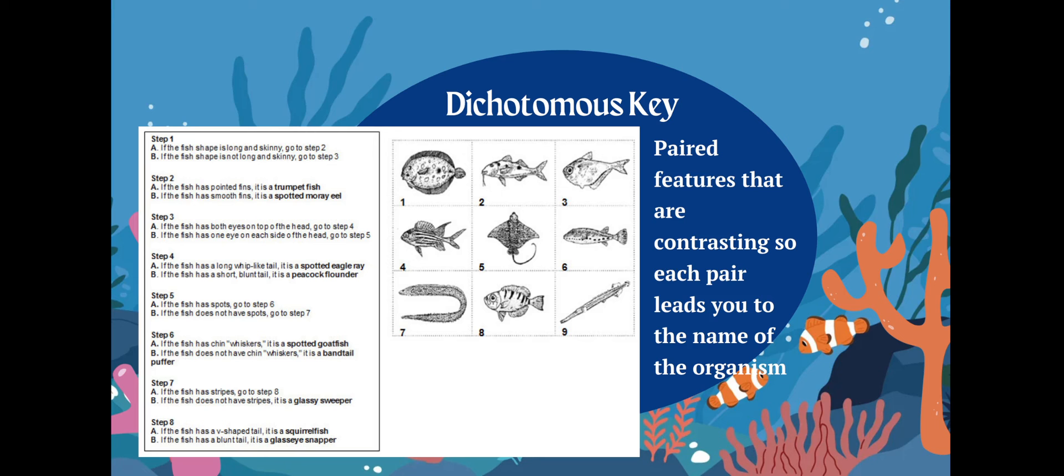So if you look at step one on the left hand side of your screen, if the fish shape is long and skinny, go to step two. If the fish shape is not long and skinny, go to step three. So if you were to look at, let's say, number nine. Number nine is long and skinny. So what are you going to do? You're going to go to step two. That's going to finally lead you to the name of the organism. So you will continue on. If you look at step two, it says if the fish has pointed fins, it's a trumpet fish. If the fish has smooth fins, it's a spotted moray eel. So now if you look at number nine, it's a little hard to tell from this picture, but you would be able to figure out the name of the organism based on your dichotomous key. Very easy. It's a little bit fun.